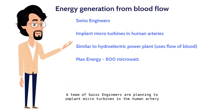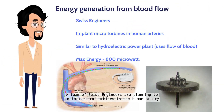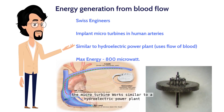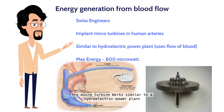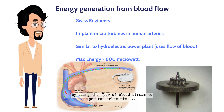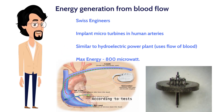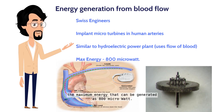A team of Swiss engineers are planning to implant micro turbines in the human artery. The micro turbine works similar to a hydroelectric power plant, by using the flow of the bloodstream to generate electricity. According to tests, the maximum energy that can be generated is 800 microwatts.